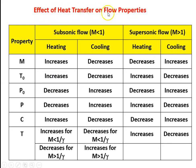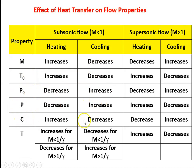This table shows the effect of heat transfer on flow properties in the Rayleigh flow. For heating in subsonic flow (M < 1): Mach number increases, stagnation temperature increases, stagnation pressure decreases, static pressure decreases, velocity increases, and static temperature increases for M < 1/√γ but decreases for M > 1/√γ. For cooling in subsonic flow: Mach number decreases, stagnation temperature decreases, stagnation pressure increases, static pressure increases, velocity decreases, and static temperature decreases for M < 1/√γ but increases for M > 1/√γ.